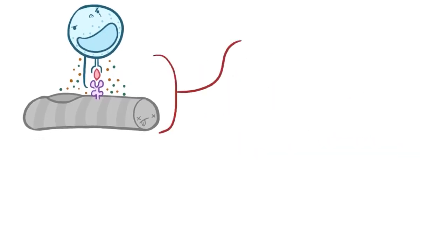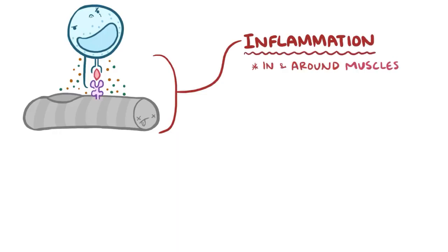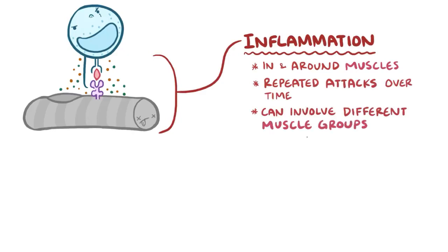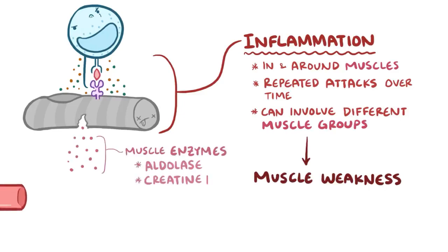The immune reaction causes inflammation in and around the muscles that are being attacked by the immune response, and typically these attacks happen repeatedly over time and can involve different muscle groups. The destruction of muscle cells can lead to muscle weakness, and can cause muscle enzymes like aldolase and creatine kinase to spill into the blood.